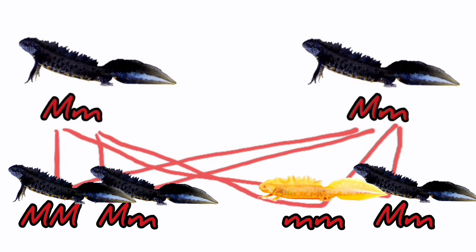Of course we cannot tell the difference between the normal animals and het albinos, because their visual appearance is the same. Because het albino occurs with double the frequency that normal animals occur, we can calculate that two thirds of the normal looking animals are likely to be het albinos. Two thirds as a percentage is 66%, so these animals are sometimes referred to as 66% het. This just means that they have a 66% chance of carrying the albino gene.